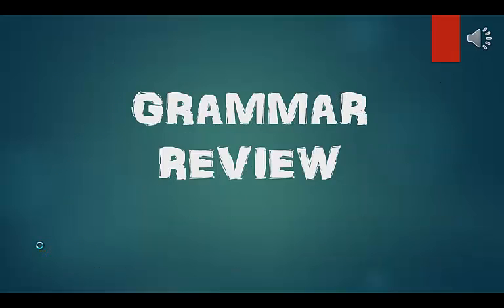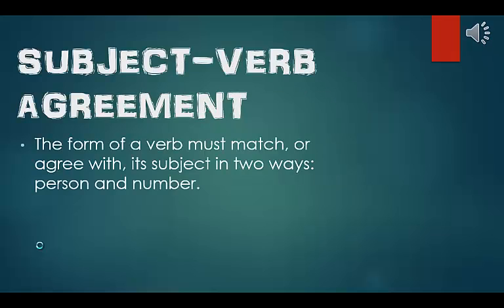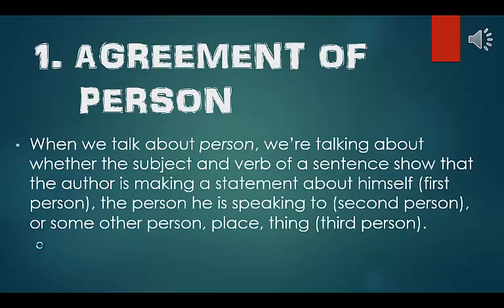Now we will move on to grammar. Subject-verb agreement. The form of a verb must match, or agree with, its subject in two ways: person and number. When we talk about person, we're talking about whether the subject and verb show that the author is making a statement about himself — first person — the person he is speaking to — second person — or some other person, place, or thing — third person.